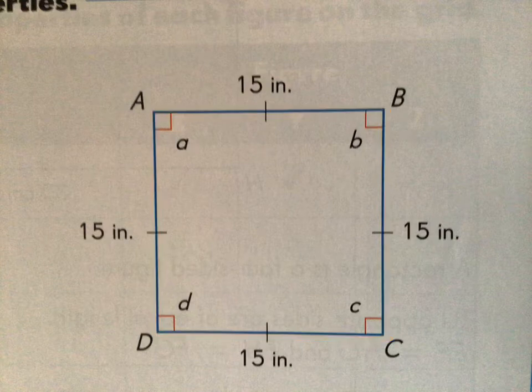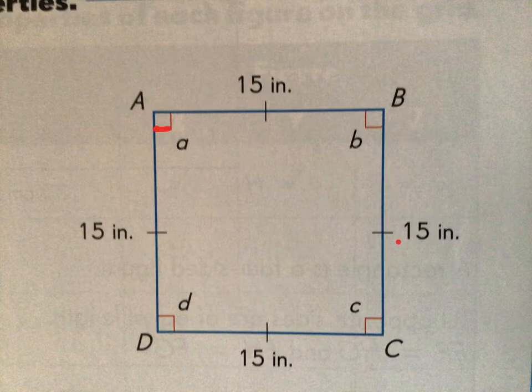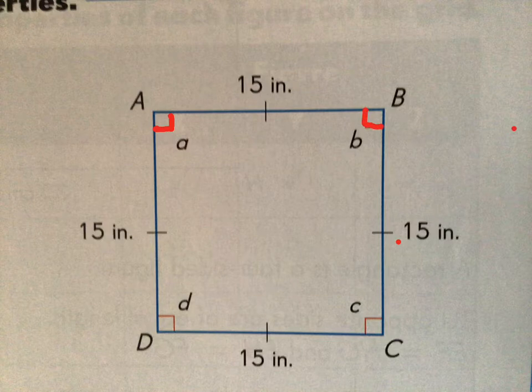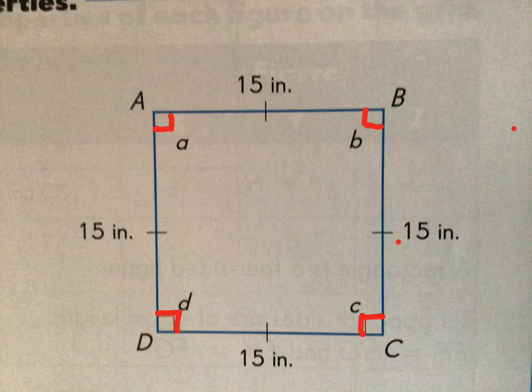Finally, a square is made up of right angles. So angle A is a right angle, which is 90 degrees. Angle B is a right angle. Angle D is a right angle. And angle C is a right angle. So a square has four right angles.